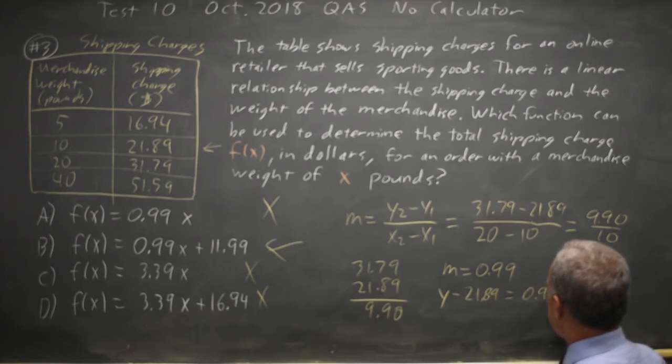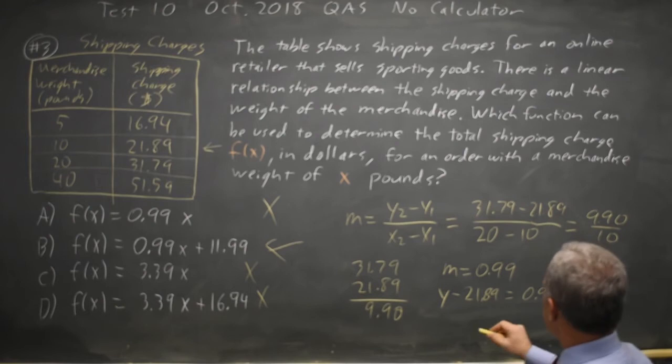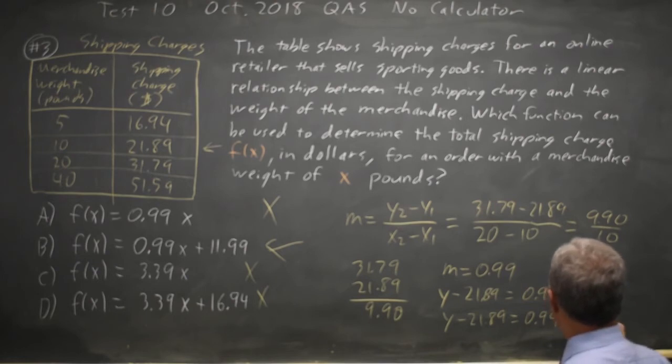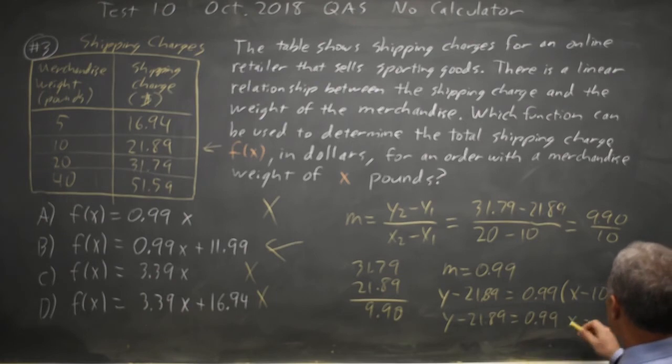Times x minus the x value 10. So y minus 21.89 equals 0.99x minus 10 times 0.99 is 9.90.